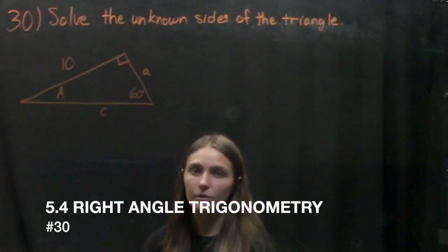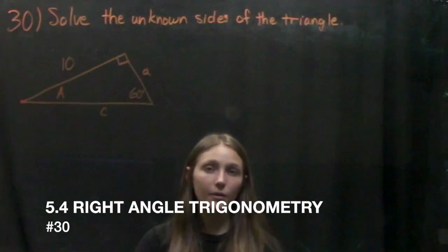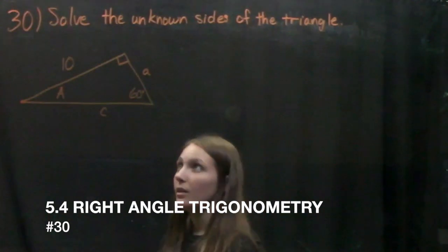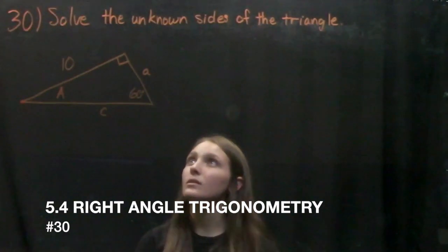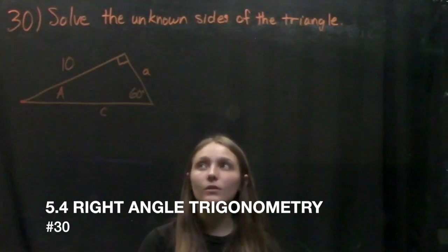Hey guys, today we're going through chapter 5, section 4 on right triangle trigonometry. We're doing number 30, which says solve the unknown sides of the given triangle.